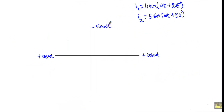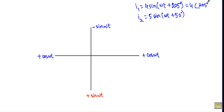Now I will show how to calculate the phase difference using the complex phasor plane. I1 is 4 sine of omega t plus 205 degrees and I2 is 5 sine of omega t plus 50 degrees. The current phasor I1 is represented as 4 at a phase angle of 205 degrees, and phasor I2 is 5 at a phase angle of 50 degrees.